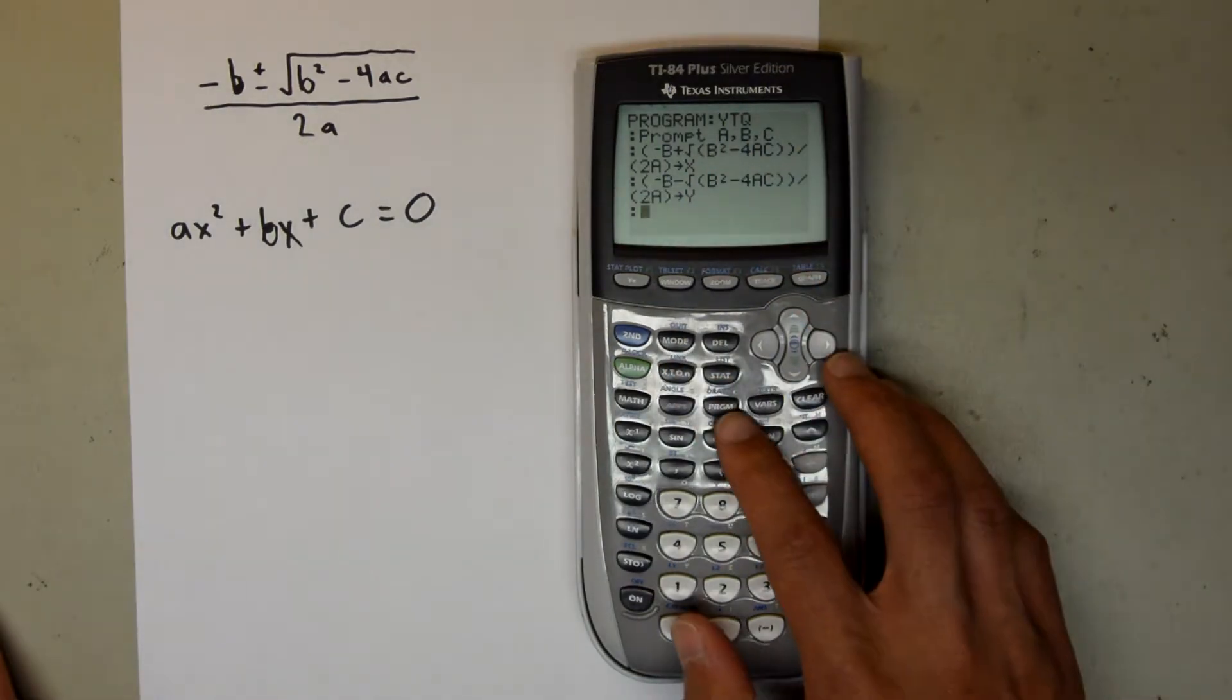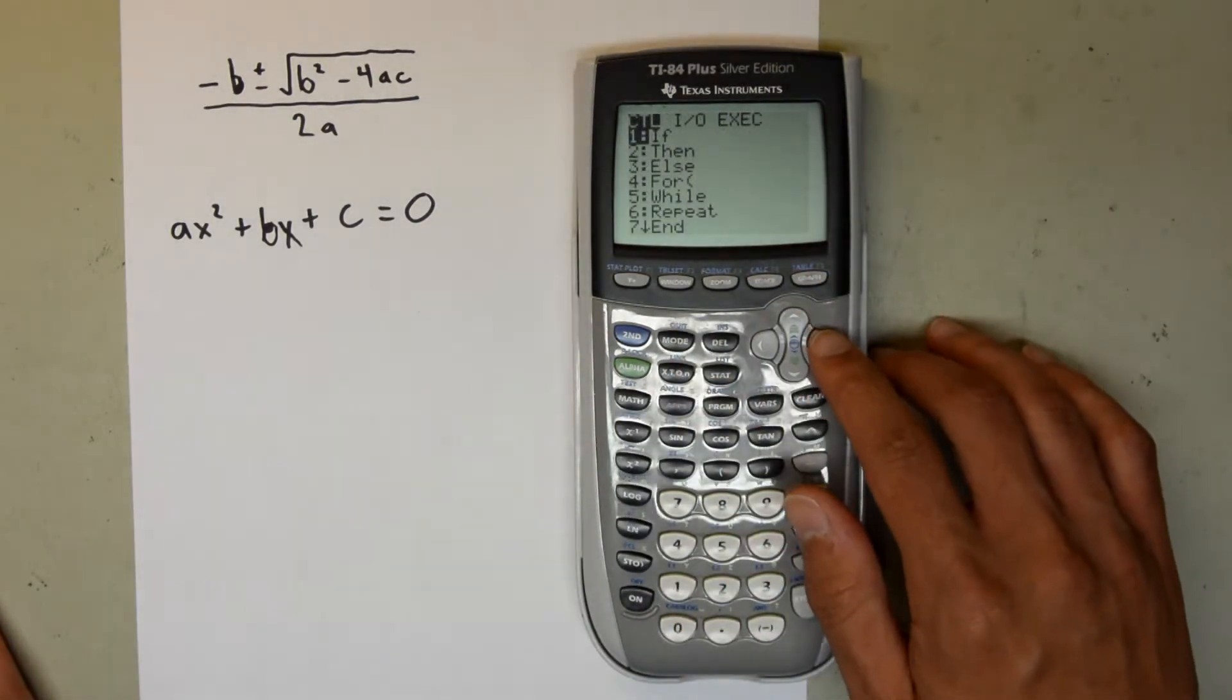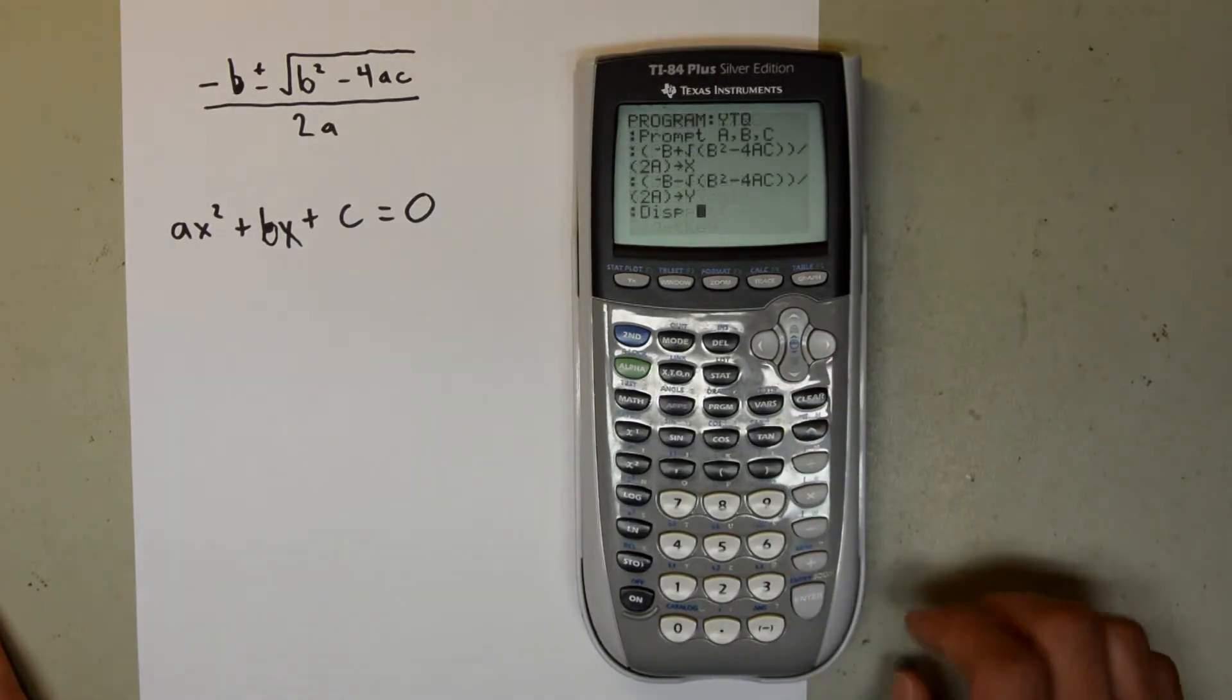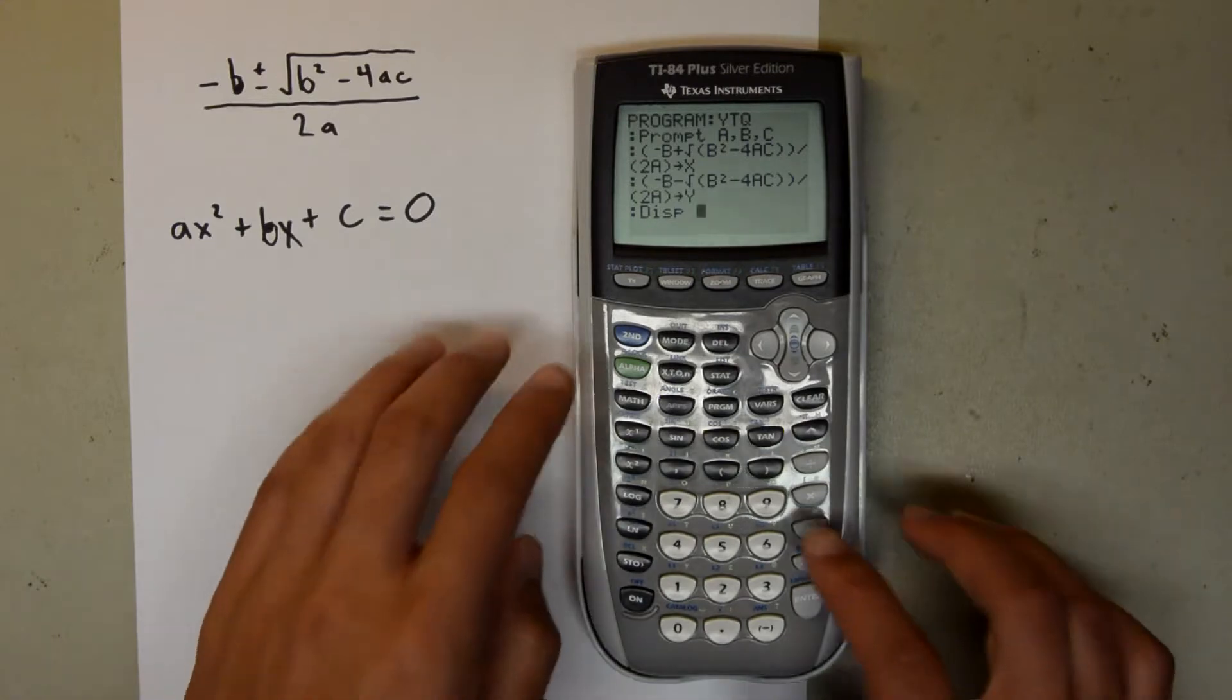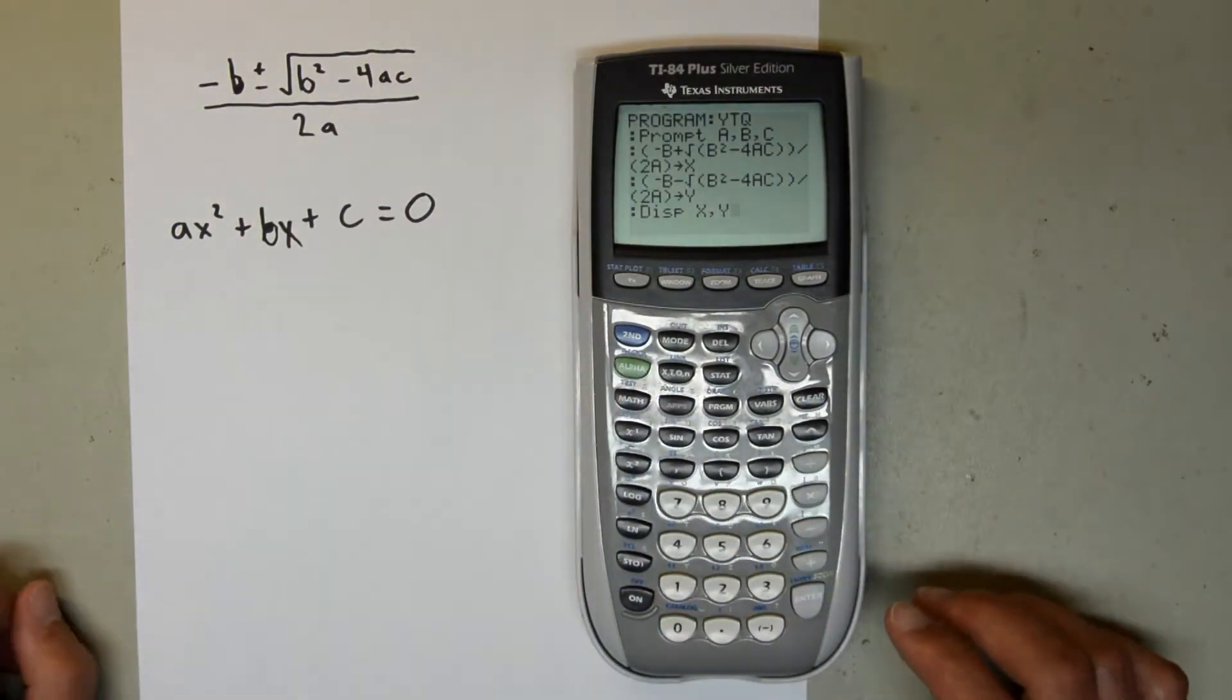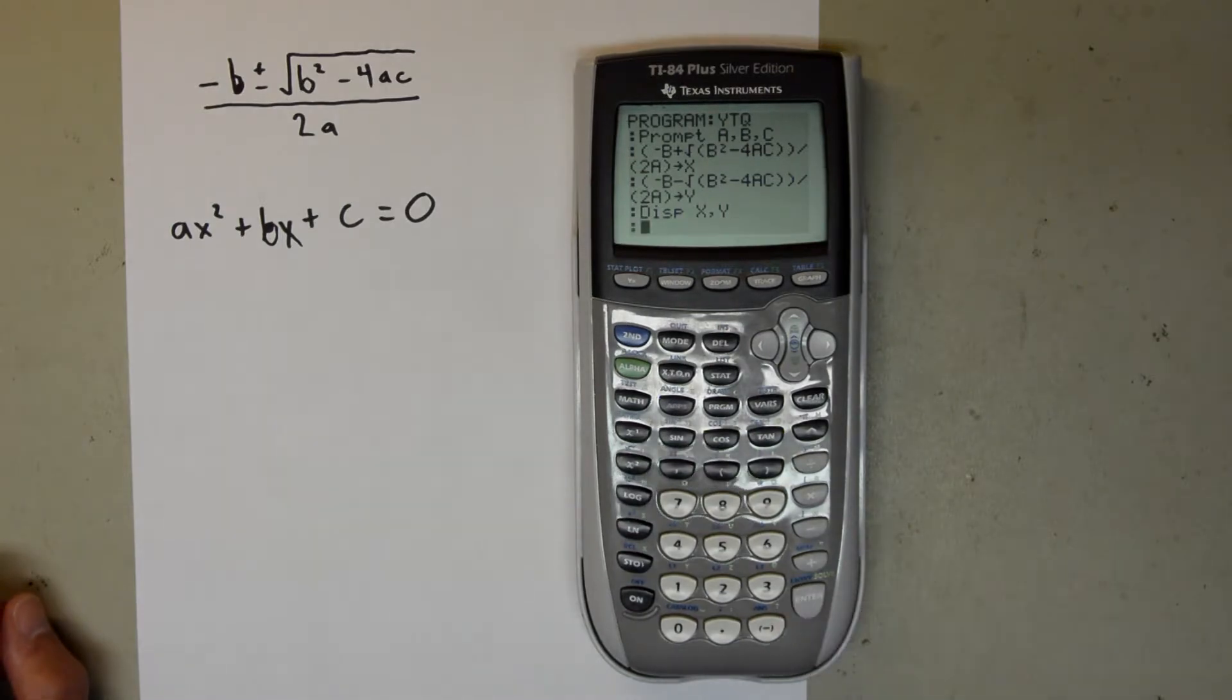Now you want to hit program again. Scroll over to IO and choose option 3, which is disp. Then type X, comma, Y, and hit enter. This tells the calculator to display the X and Y values it comes up with.